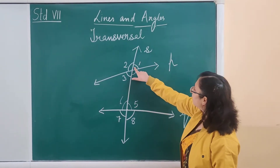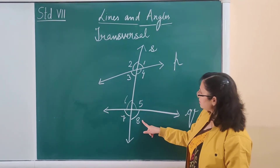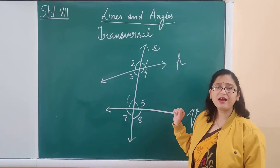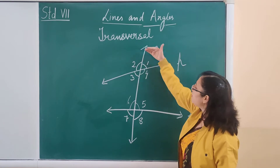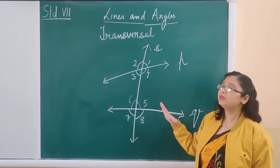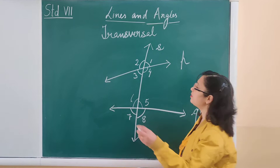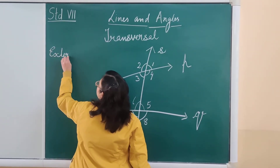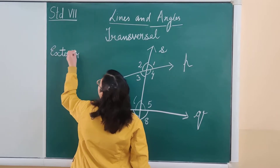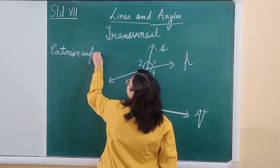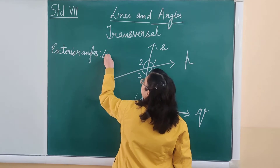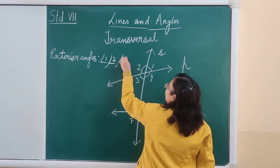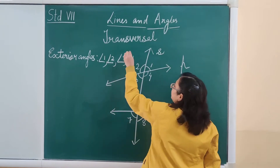Angle 1, angle 8, angle 7, and angle 2 are in the exterior of the lines, so they are known as exterior angles. The exterior angles are angle 1, angle 2, angle 7, and angle 8.